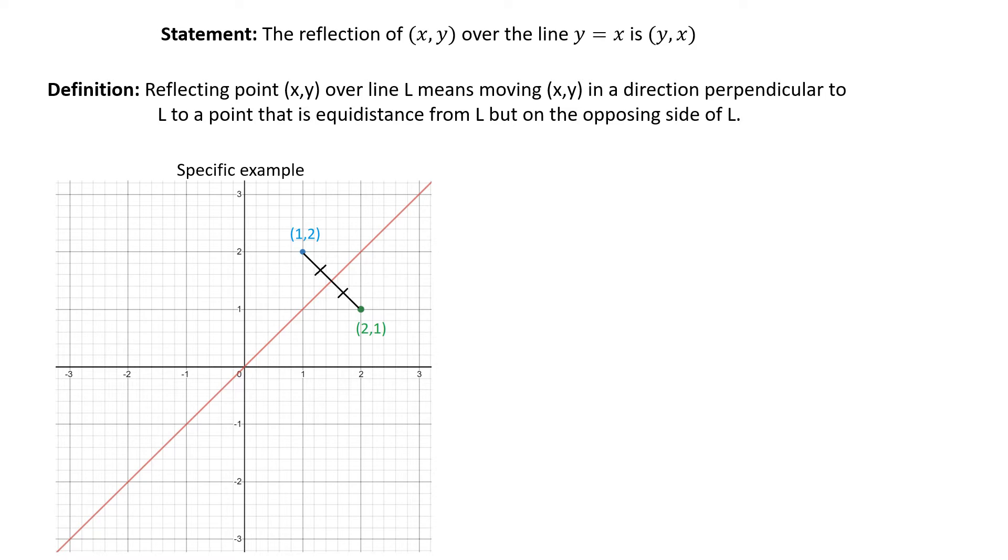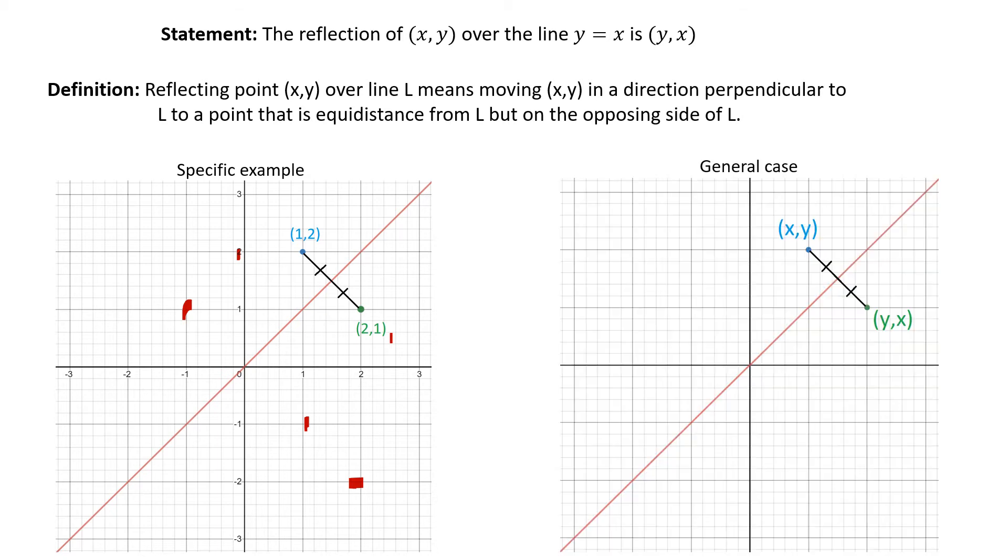But this is only for one point. I also have to show for the point 0, 2; for negative 1, 1; for 1, negative 1; 2, negative 2; 2 halves, 1 half. I have to prove it for every single point. I can't just show one example. I have to show all of the examples. So to do that, we're going to talk in general terms or with a general case.